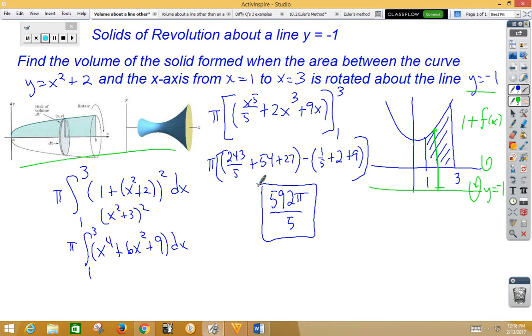So again, the key is when you have a negative value so that your radius length has increased, you need to add that distance. Remember, distance is always positive.